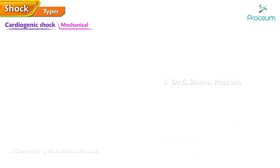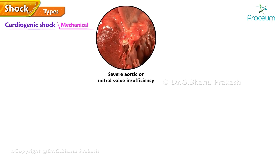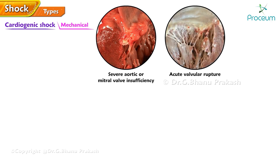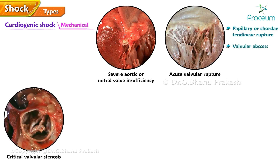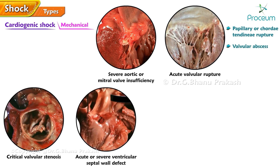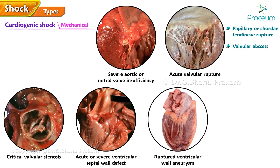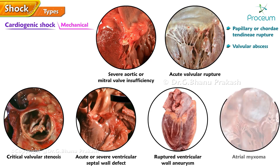Mechanical causes of cardiogenic shock include: severe aortic or mitral valve insufficiency, acute valvular rupture, papillary or chordae tendineae rupture, valvular abscess, critical valvular stenosis, acute or severe ventricular septal wall defect, ruptured ventricular wall aneurysm, and atrial myxoma.